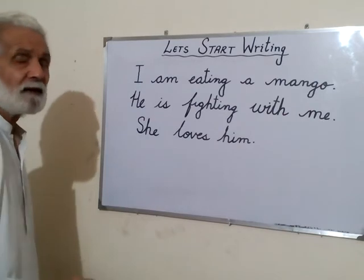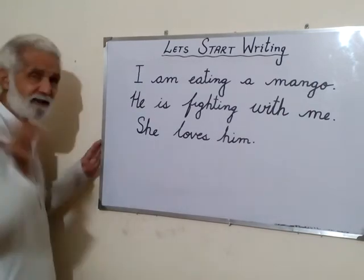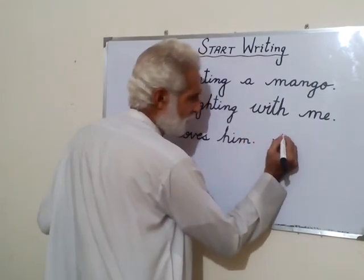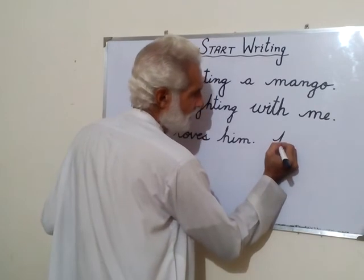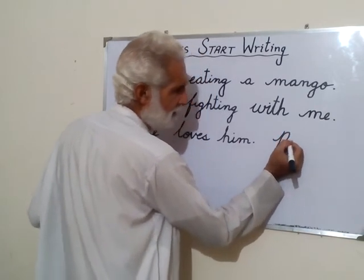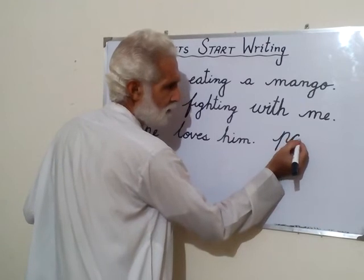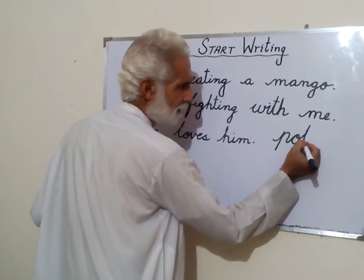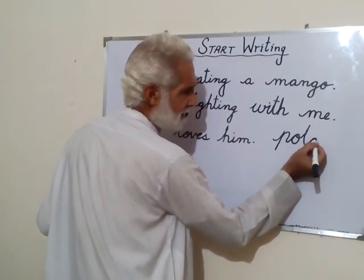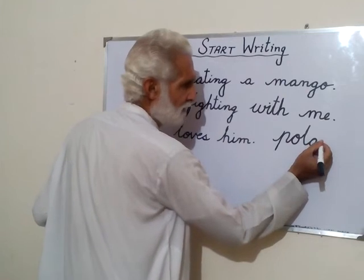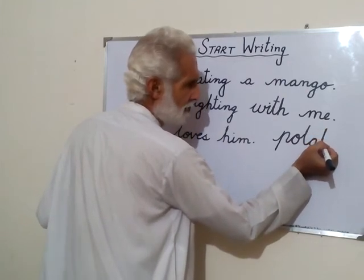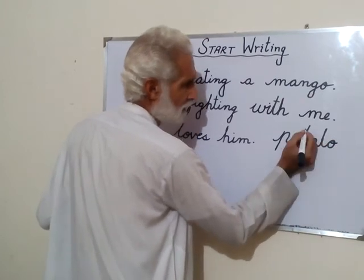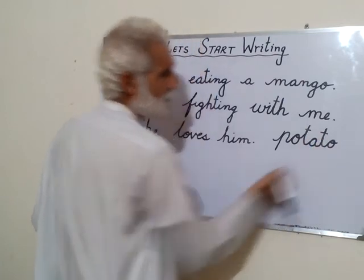Now write a few words — like 'potato.' The spelling of potato is P, O, T, A, T, O. We will write potato: P, then a beautiful O, turn and now T, then A — make a C, go up, come down — again T, coming down, again O — make a C, join it from the top. Potato.